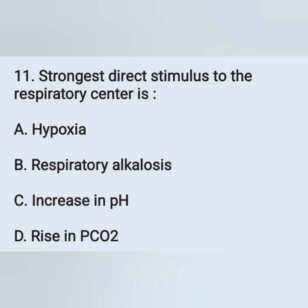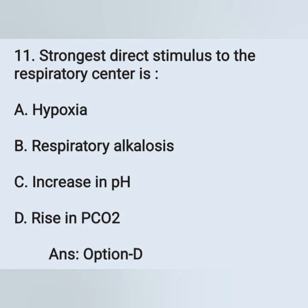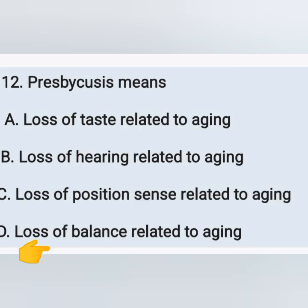11th question: the strongest direct stimulus to the respiratory center is — option A: hypoxia, option B: respiratory alkalosis, option C: increase in pH, option D: rise in partial pressure of carbon dioxide. The strongest direct stimulus to the respiratory center is rise in partial pressure of carbon dioxide — option D is the correct answer.